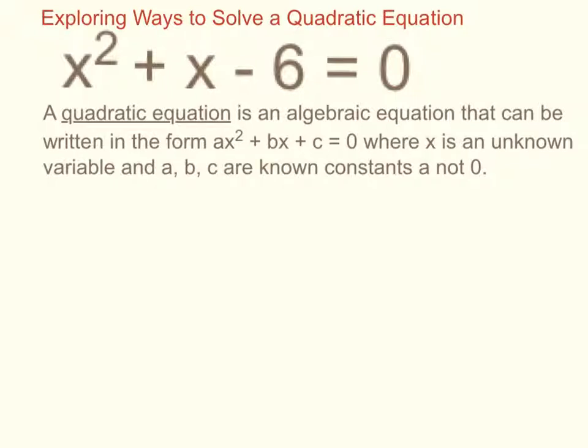Plus b times x, so again, there's no number written there, so it's just 1x, and the c, in this case, would be a negative 6. Subtracting 6 is the same as adding negative 6.